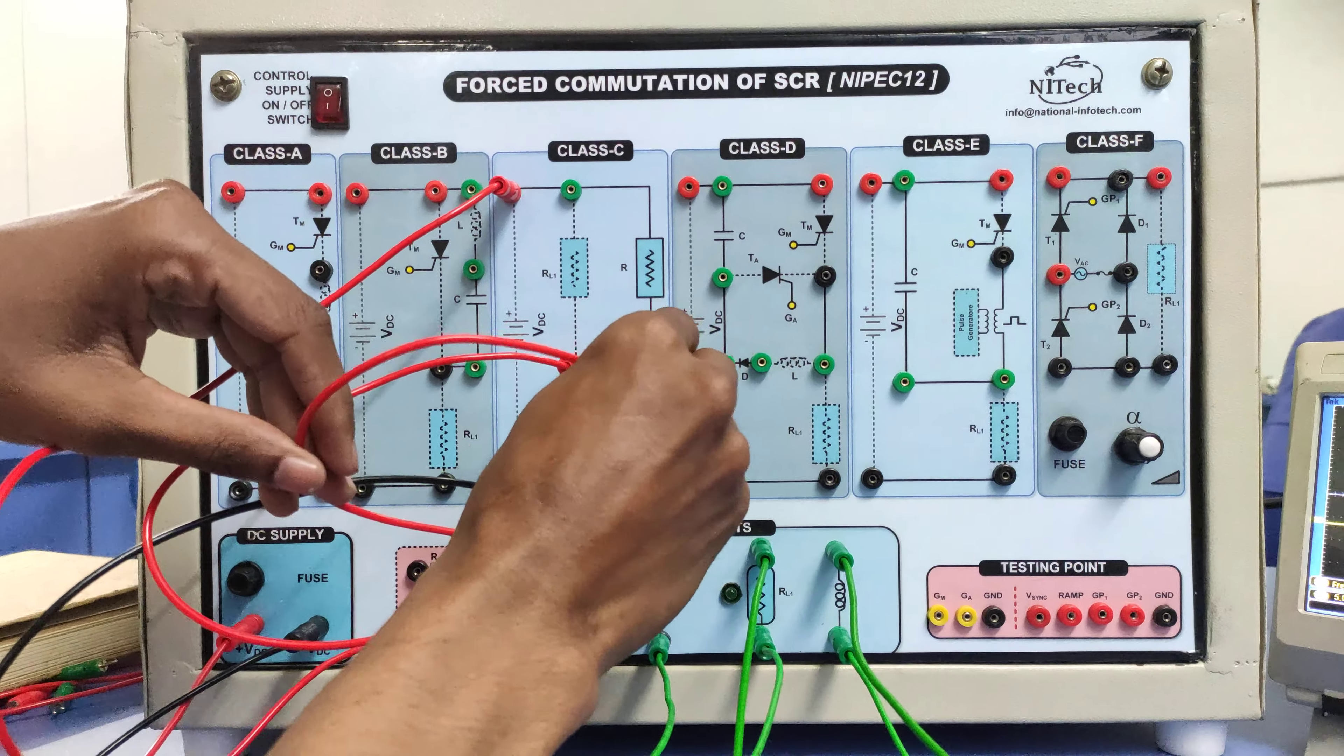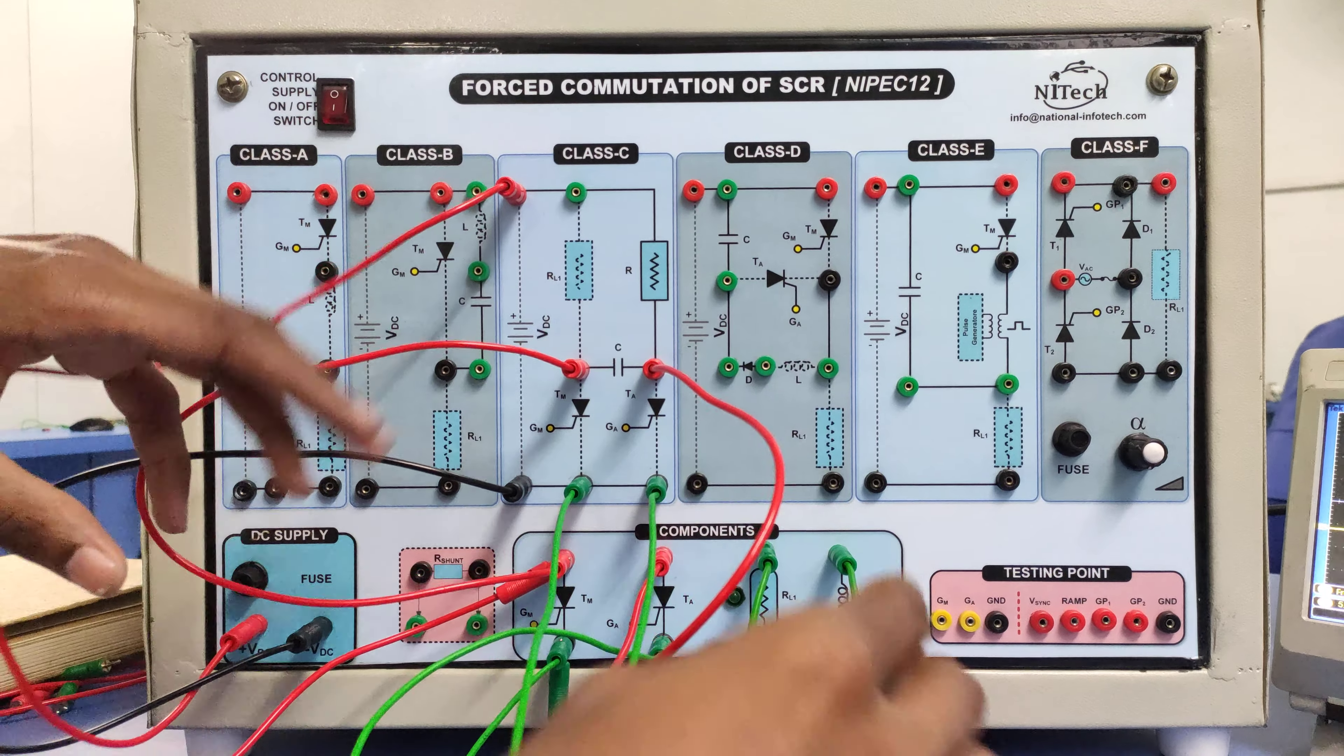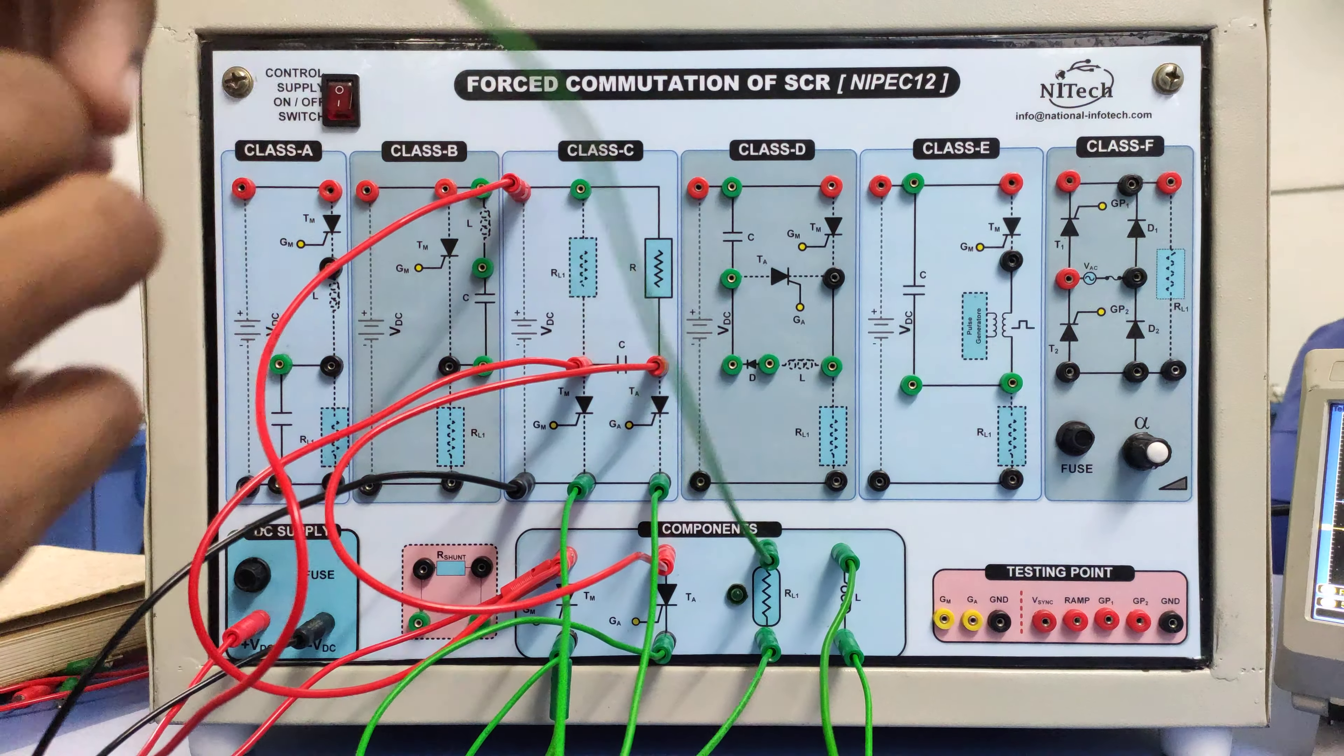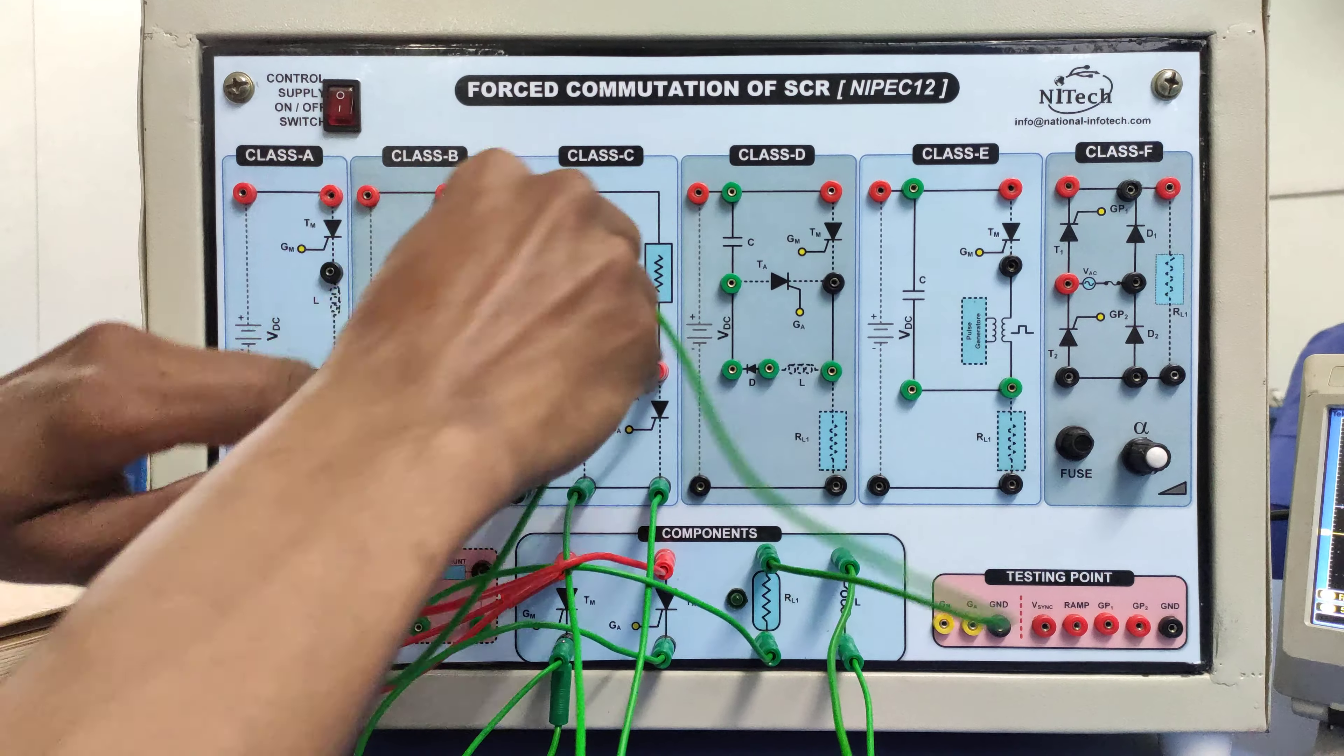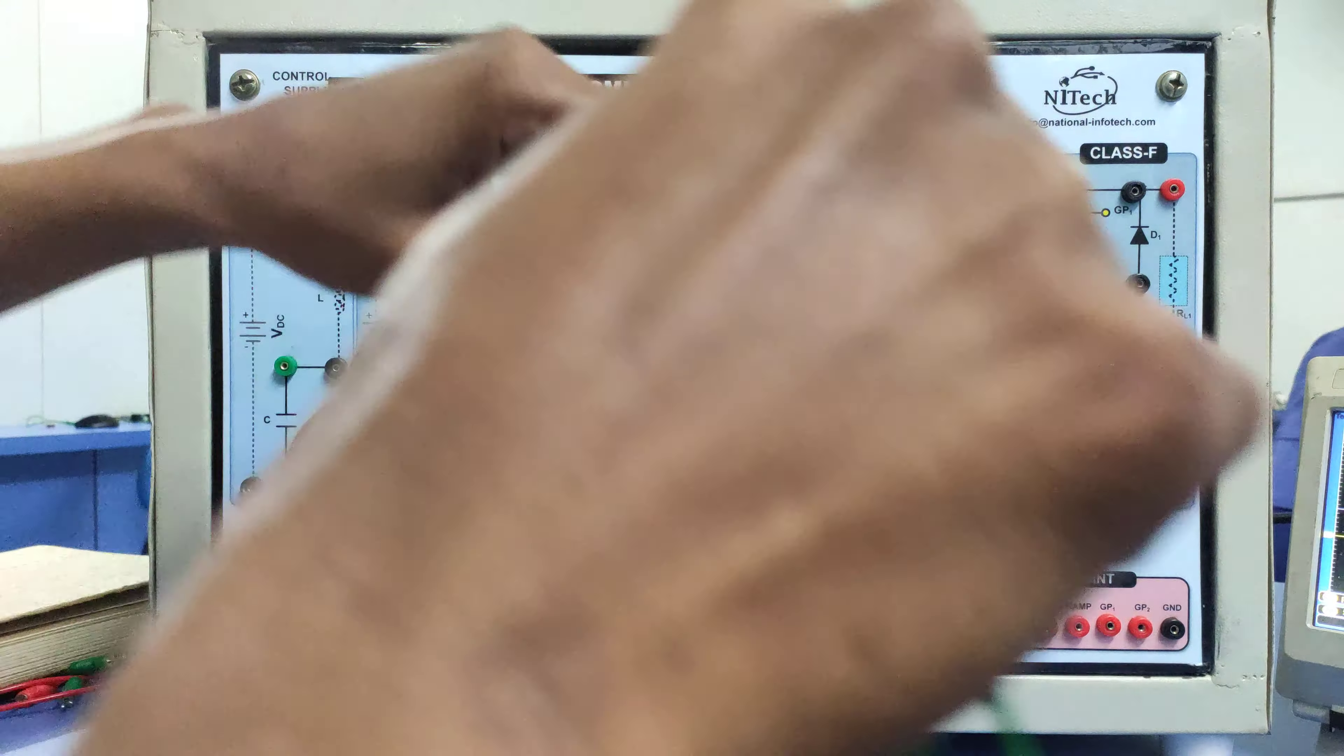And this is an anode of TM auxiliary thyristor, this is cathode of TM. Now I have to connect the load resistor over here as per the circuit connection. So I am connecting my load resistor here.